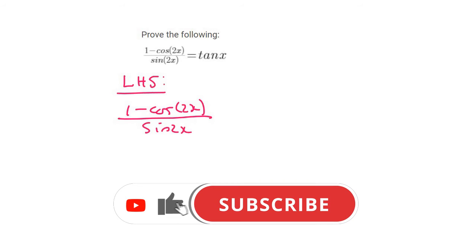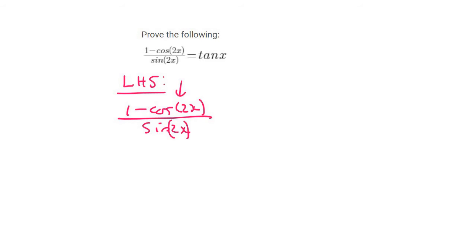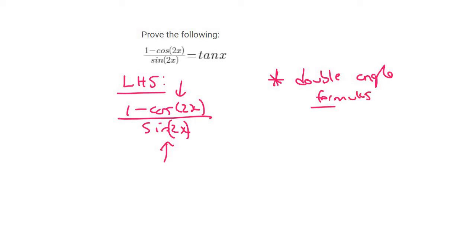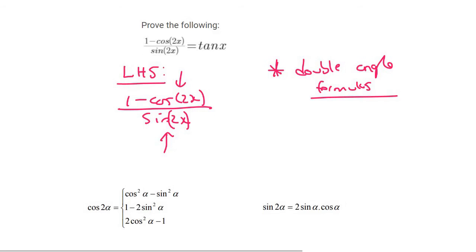What I would like you to identify is the following: cos 2x and sin 2x. Those are double angle formulas, or identities. We can use our formula sheet now. But the big question I always get from students is: which ones do I choose?